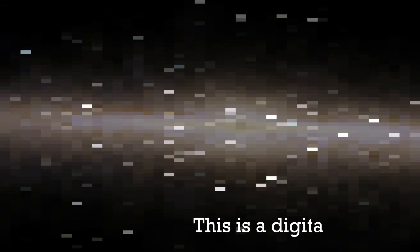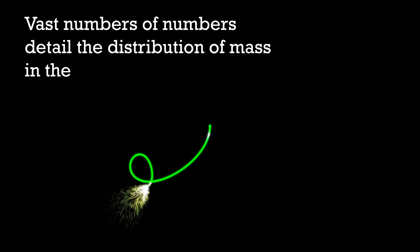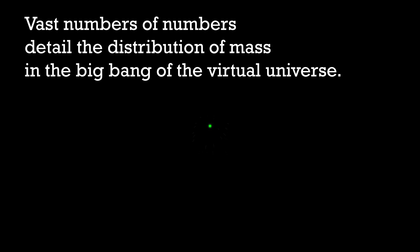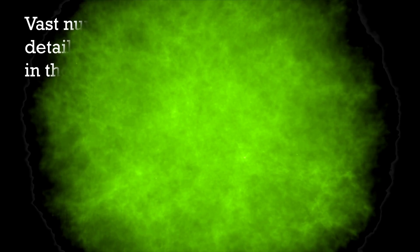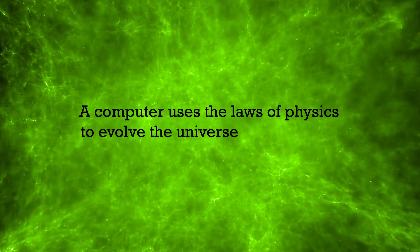This is a digital galaxy. A digital galaxy really looks like this. Vast numbers of numbers detail the distribution of mass in the Big Bang of the virtual universe. A computer uses the laws of physics to evolve the universe through time.